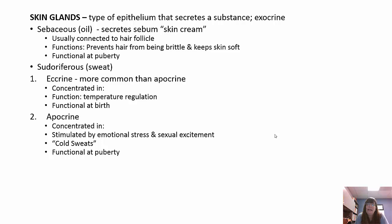Skin glands secrete a substance — they're exocrine glands. We have sebaceous (oil) and sudoriferous (sweat) glands. Sebaceous glands secrete sebum, are connected to a hair follicle, and prevent hair from being brittle while keeping skin soft. They become functional at puberty. Sweat glands have two types: eccrine and apocrine. Eccrine glands are more common, function in temperature regulation, are functional at birth, and are concentrated all over the body. Apocrine glands are stimulated by emotional stress and sexual excitement, are functional at puberty, and are concentrated in the armpit area.